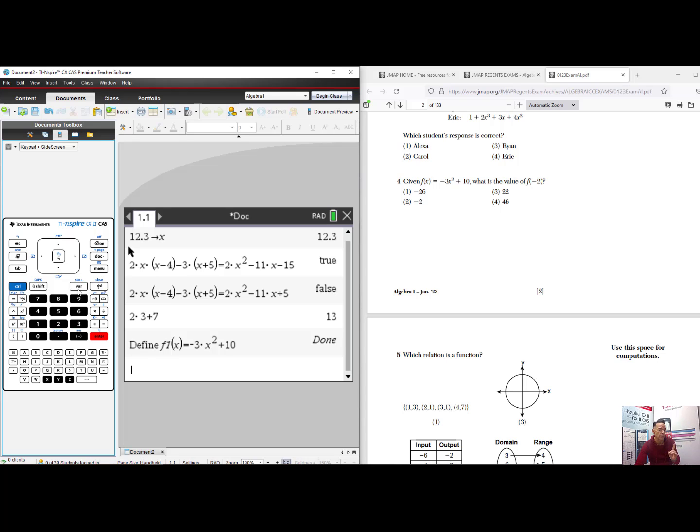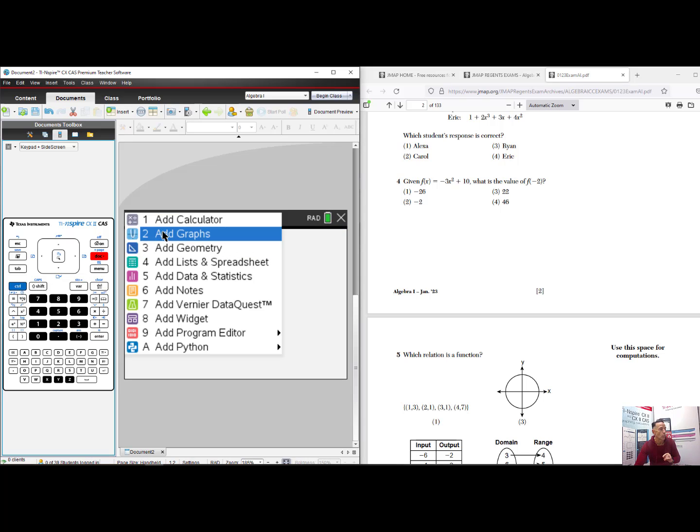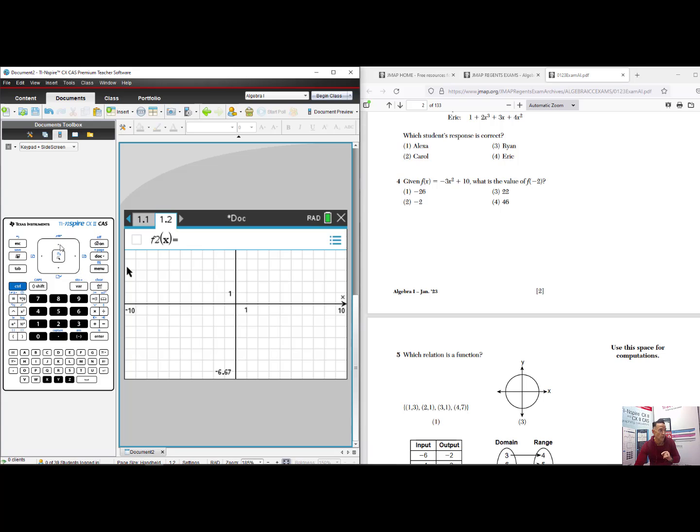But now, when I press the var button for variables, f1 is defined. When I select f1, it's asking me for what value of x do we want to evaluate this function. I'll put in negative 2, I'll press Enter, and I get an output of negative 2. Why do it this way? Well, when I add a Graphs page, and I scroll up because it defaults to f2, that's the next open edit line, I have my function that I defined on 1.1 on the calculator app already here in the Graphs application. So I could study the function further now that I'm on a Graphs page.